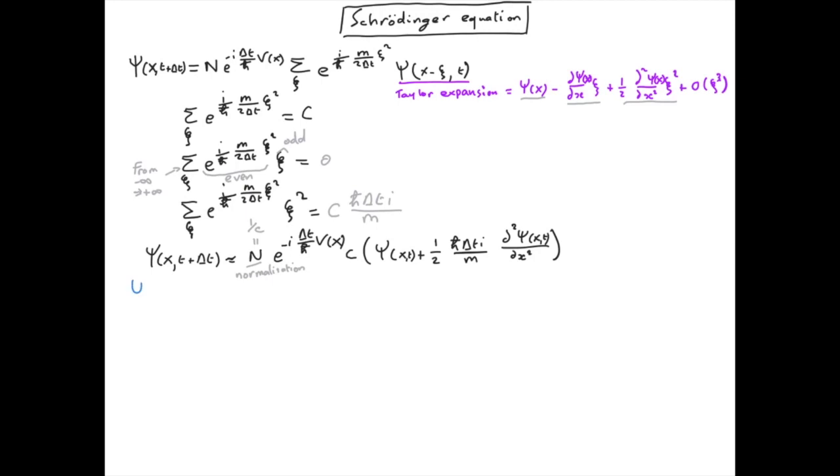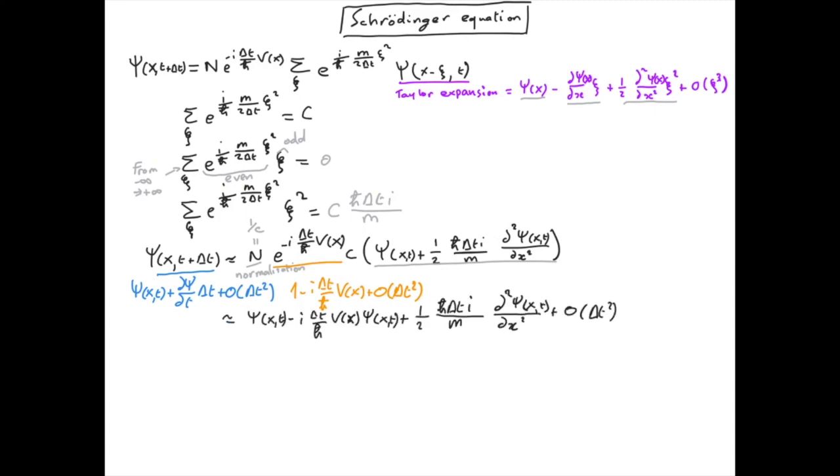Now we want to take a Taylor expansion of the amplitude of probability because we have delta t infinitely small, and we only keep the first order in delta t. We also take a Taylor expansion of the exponential term keeping only first order. The psi at x and t on both sides cancel and we can neglect the second order term in delta t.